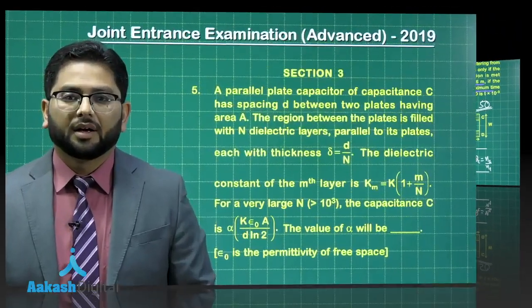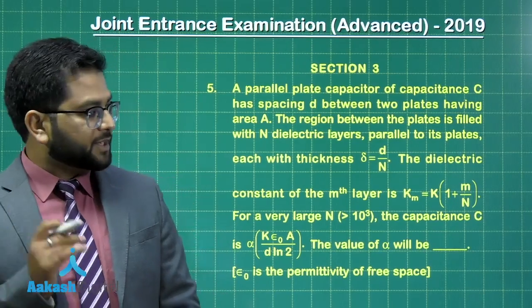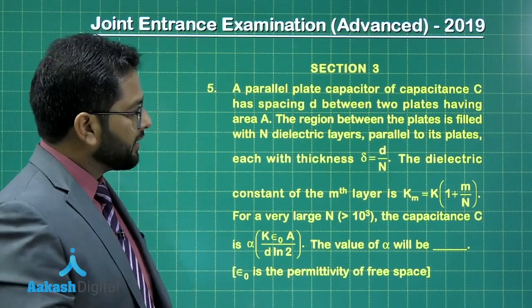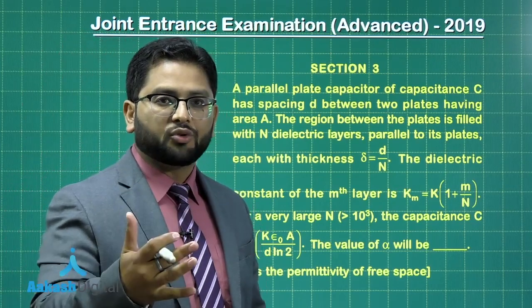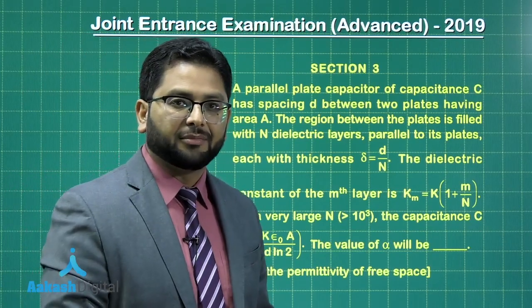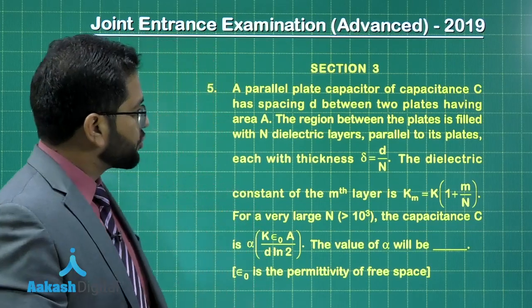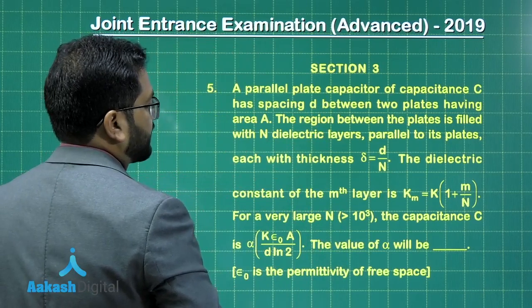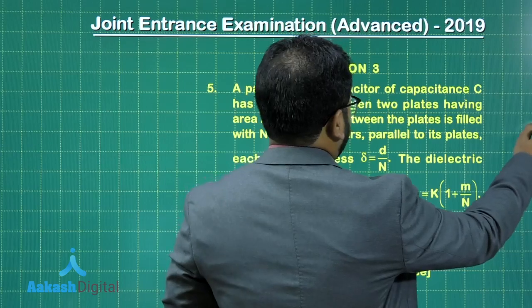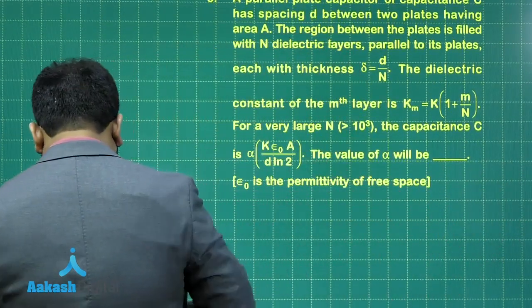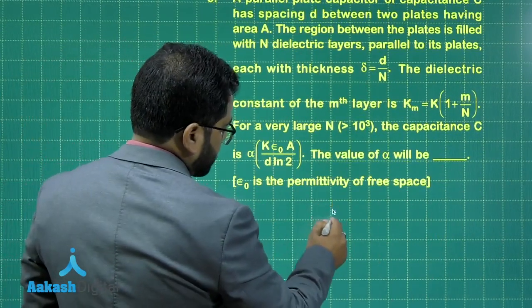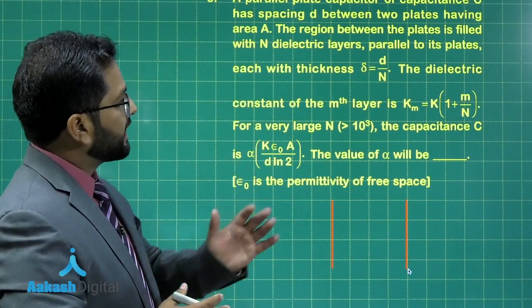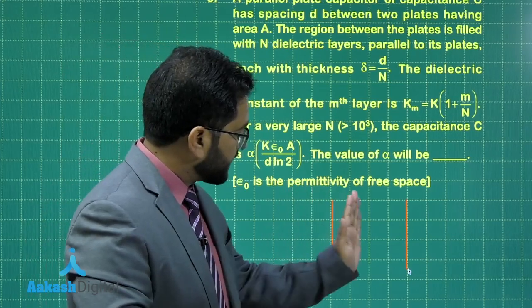Let's move to the next. All right. The fifth question of section 3. This has been brought from the topic of capacitor. And we need to calculate the capacitance. As I'd say that, this is really a wonderful trait of JEE advance that the same question is so beautifully and so alternatively framed that you find freshness in the question. Let's try to see. You would find my words true in this question. A parallel plate capacitor of capacitance C has spacing D between the two plates having area A. The region between the plates is filled with N dielectric layer parallel to its plate.